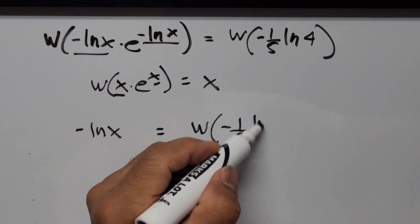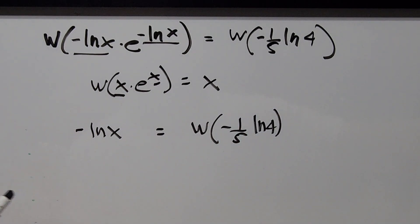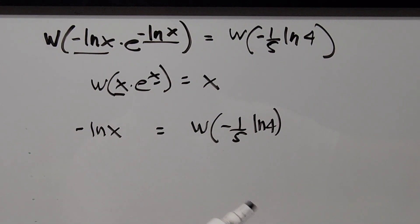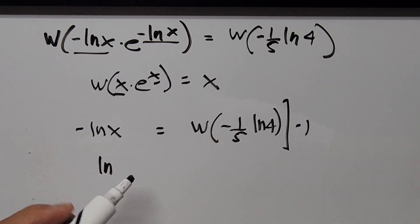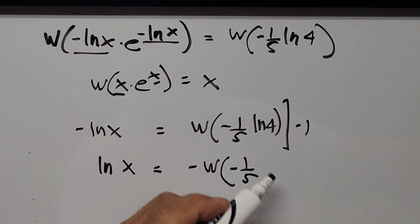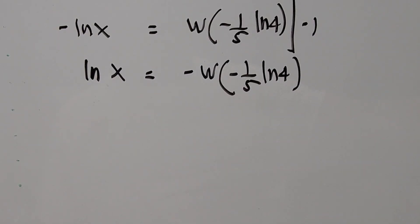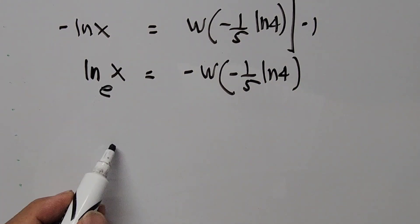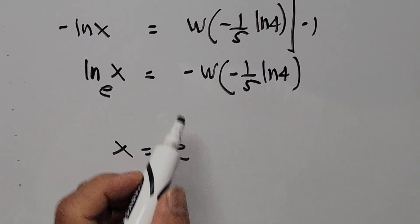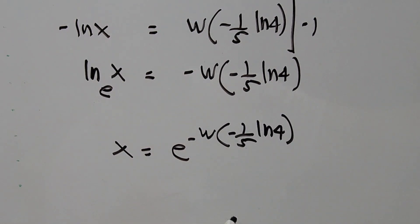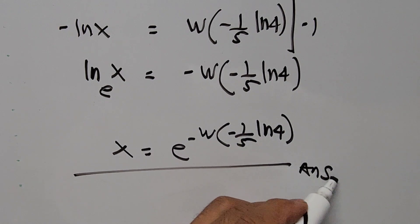We notice there is a negative in front, so we multiply by negative 1, giving us positive ln of x equals negative W of negative one-fifth ln of 4. Using the definition of the natural logarithm (base e), the value of x is equal to e to the power of negative W of negative one-fifth ln of 4. This is our final answer.